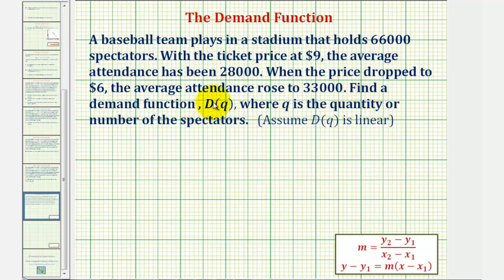Find a demand function D(q), where q is the quantity or number of spectators. And we can assume that D(q) is linear.